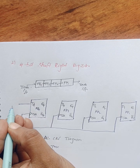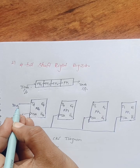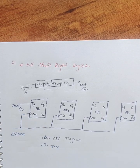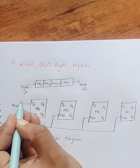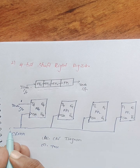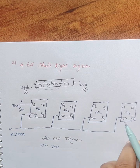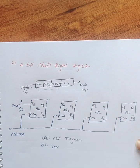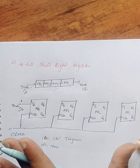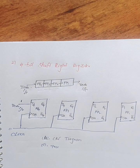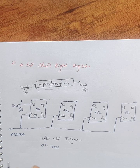Input data is applied at the first flip-flop — the data input is applied on the left side of the circuit. Initially, clock equal to zero. When clock equals zero, all four flip-flops are reset and the output of the register becomes zero, zero, zero, zero.